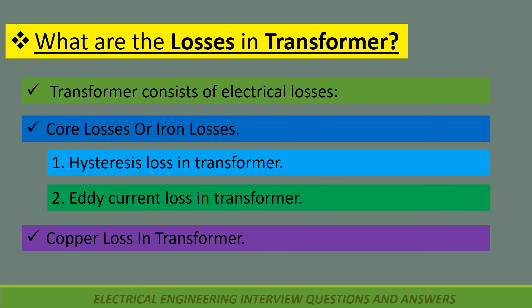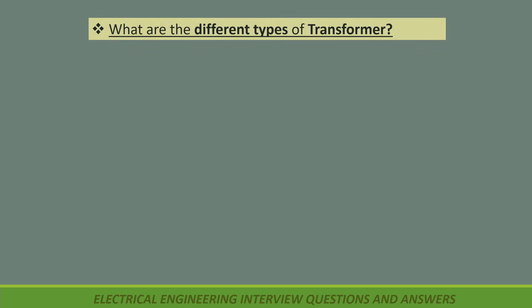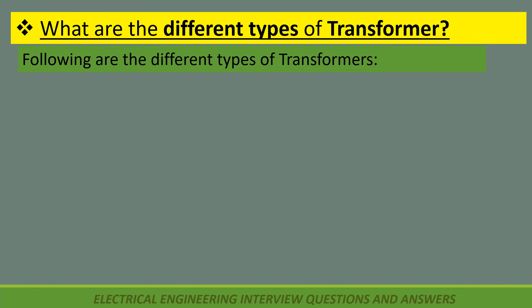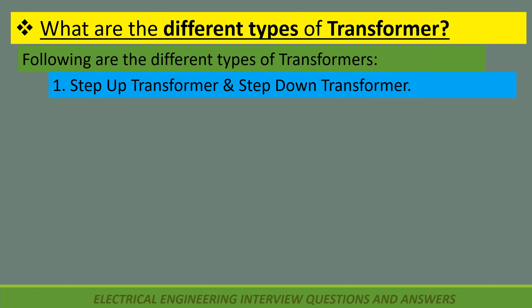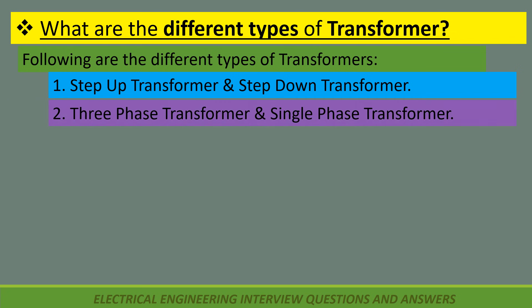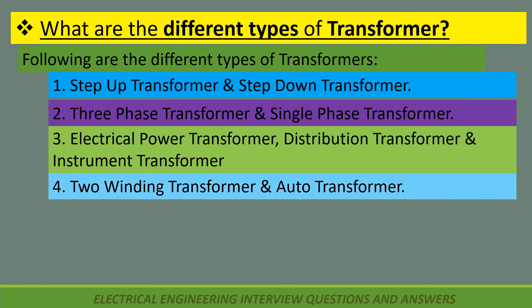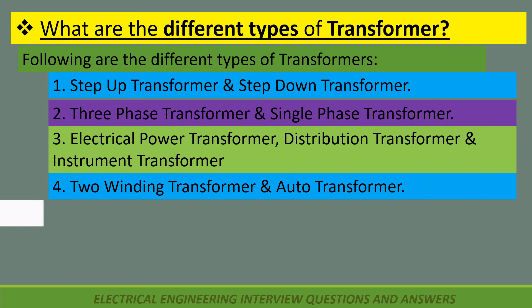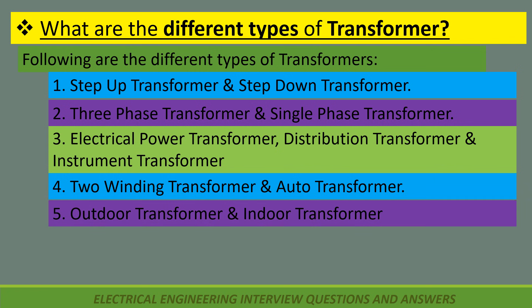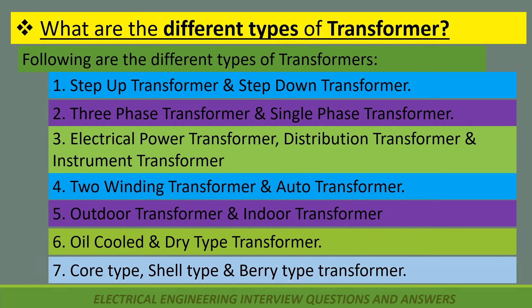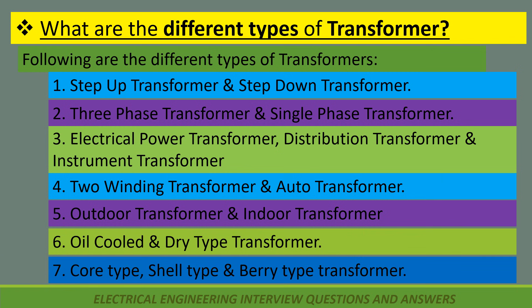What are the different types of transformer? Following are the different types: 1. Step up transformer and step down transformer. 2. Three phase transformer and single phase transformer. 3. Electrical power transformer, distribution transformer and instrument transformer. 4. Two winding transformer and auto transformer. 5. Outdoor transformer and indoor transformer. 6. Oil cooled and dry type transformer. 7. Core type, shell type and berry type transformer.